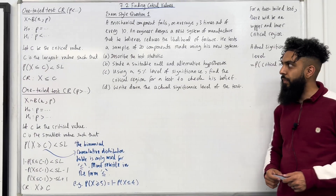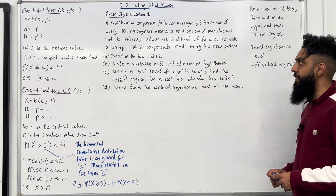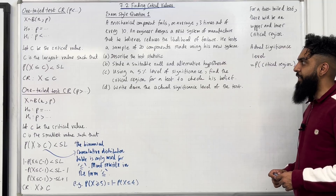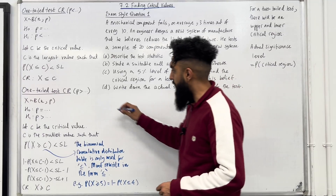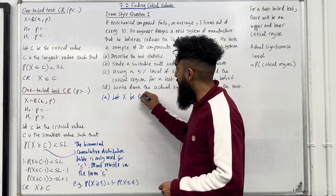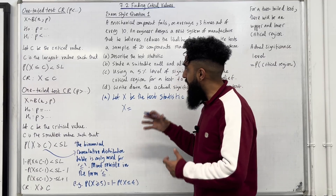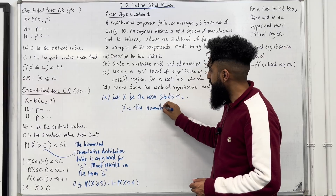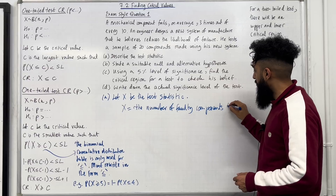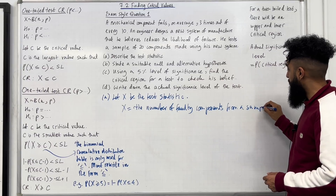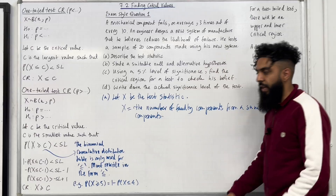Exam style question 1: A mechanical component fails on average 3 times out of every 10. An engineer designs a new system of manufacture that he believes reduces the likelihood of failure. He tests a sample of 20 components made using his new system. Part A asks us to describe the test statistic. Let capital X be the test statistic. X equals the number of faulty components from a sample of 20 components.